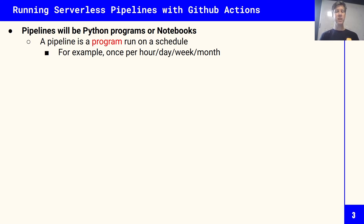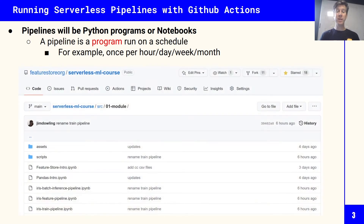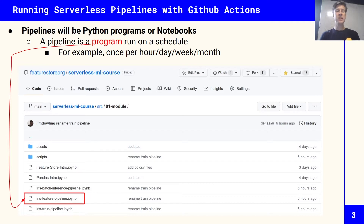It's like a service almost — run once a day, once a week, once a month. One of the pipelines we'll have in our first lecture is called the Iris feature pipeline, which creates features from the Iris flower dataset and writes them to the feature store. We can generate new synthetic data, write that to the feature store, and run this every day. That's why we call it a pipeline — it's a program that runs on a schedule.